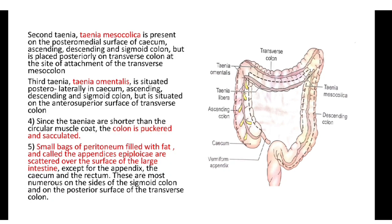Taenia mesocolica is present on the posteromedial surface of the cecum, ascending, descending, and sigmoid colon, but is placed posteriorly on the transverse colon at the site of attachment of the transverse mesocolon. Taenia omentalis is situated posterolaterally in the cecum, ascending, and descending colon, but on the anterior superior surface of the transverse colon. Since the taeniae are shorter than the circular muscle coat, the colon is puckered and sacculated. Small bags of peritoneum filled with fat called appendices epiploicae are scattered over the surface of the large intestine, except for the appendix, cecum, and rectum, and are most numerous on the sides of the sigmoid colon and on the posterior surface of the transverse colon.